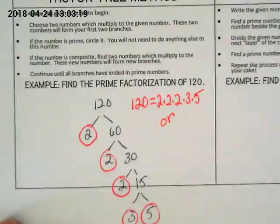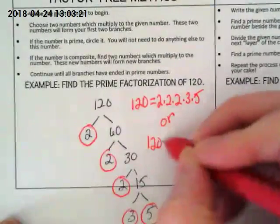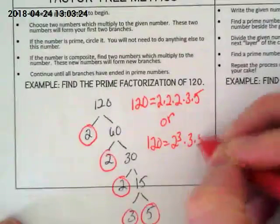Or the shortcut is 120 is equal to 2 to the third power times 3 times 5.